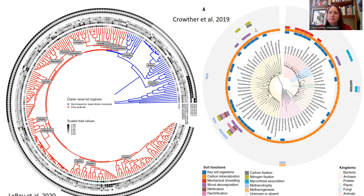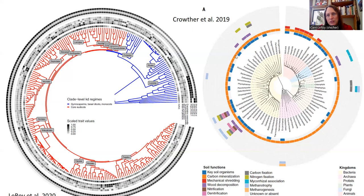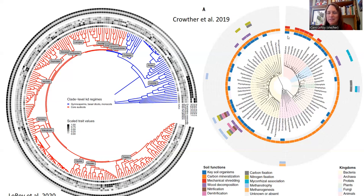This is really similar to the Crowther et al. paper that shows the same kind of thing — it's like the tree of life showing what kinds of soil functions are done by different organisms. You can look at wood decomposition here, and something like methanogenesis is really rare, occurring only in a specific group of organisms. What you can see is that carbon mineralization is something that everyone does, which is why respiration is such an important part of the decomposition process.